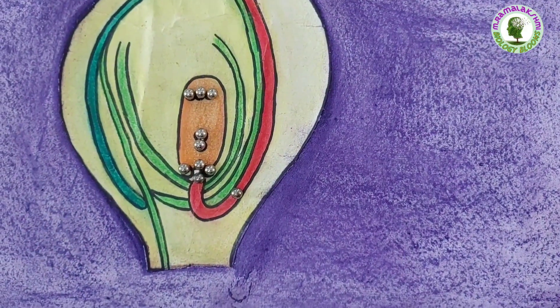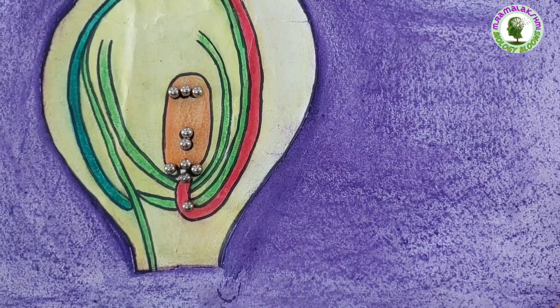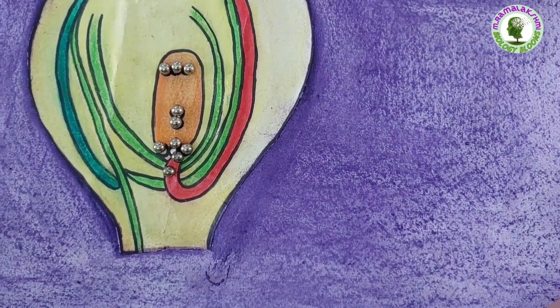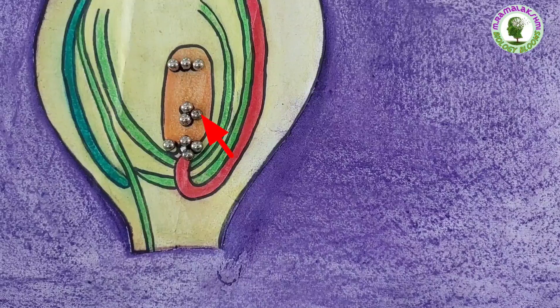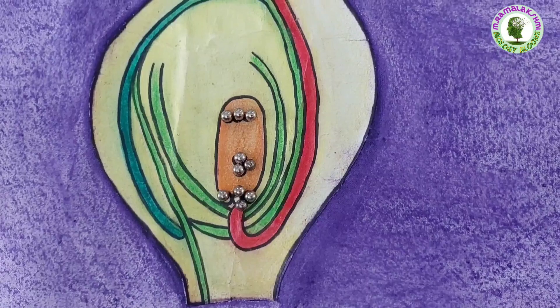And the second male nucleus moves to the center and fuses with the central cell which has 2 polar nuclei. It results in the formation of endosperm. It is known as second fertilization.